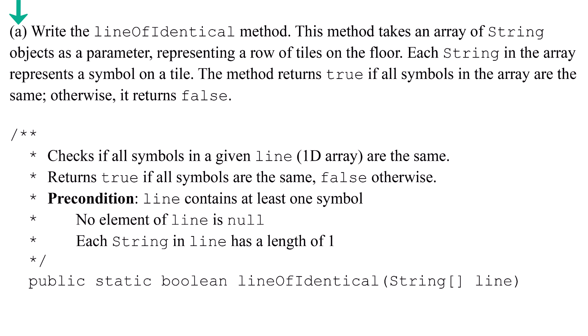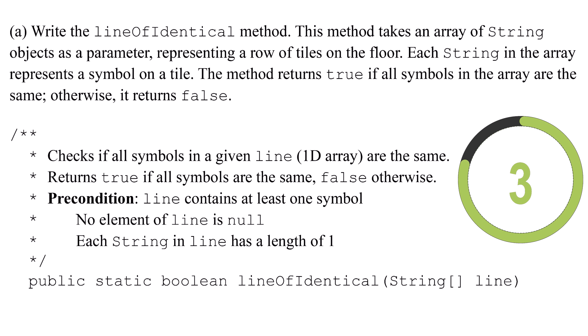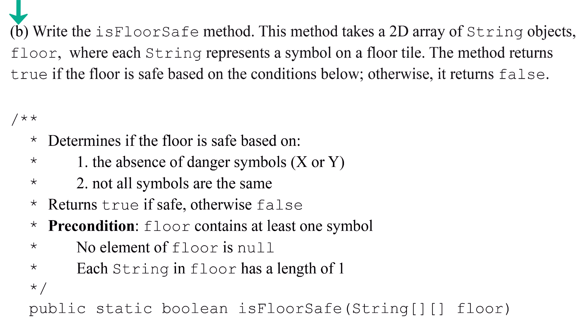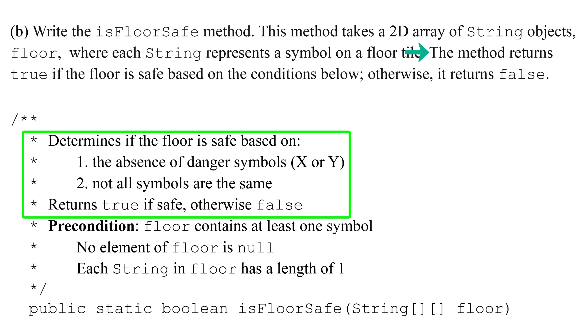Here, the sample floor is encoded as a 2D array of strings. Here is the Temple of Arrays class with the three method bodies you will be writing. Part A: Write the LineOfIdentical method. This method takes an array of string objects as a parameter representing a row of tiles on the floor. Each string in the array represents a symbol on a tile. The method returns true if all the symbols in the array are the same; otherwise, it returns false. Pause here and complete the problem. Part B: Write the IsFloorSafe method. This method takes a 2D array of string objects, floor, where each string represents a symbol on a floor tile. The method returns true if the floor is safe based on the conditions; otherwise, it returns false. Pause here and complete the problem.